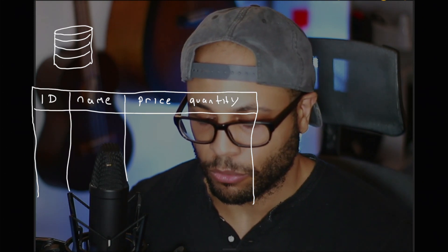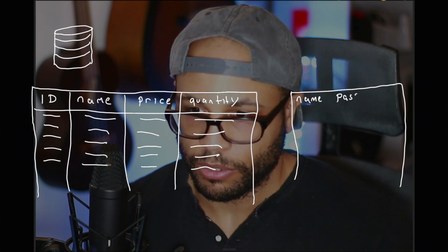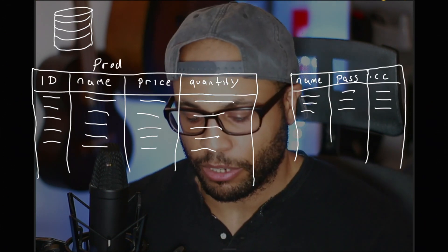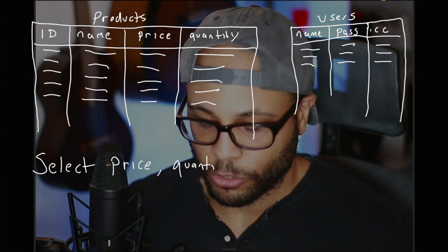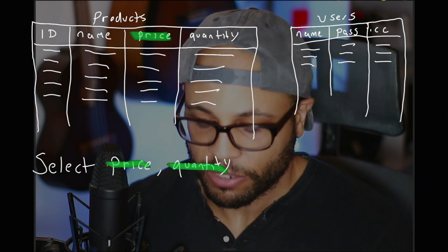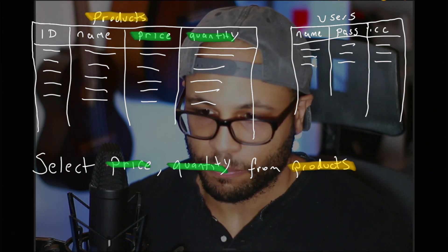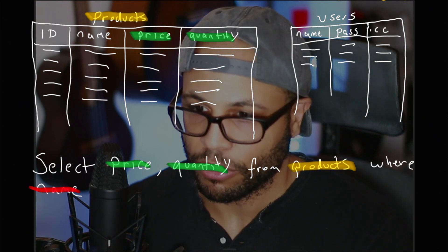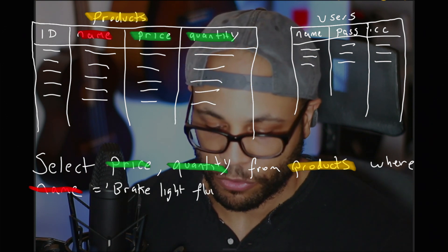In the database, data is grouped by tables, and each table contains rows and columns. An application like this may have a products table and also a users table. To quickly and easily search this database, developers use a programming language called SQL, and a simple query returns the price and the quantity from the products table for the item being searched.